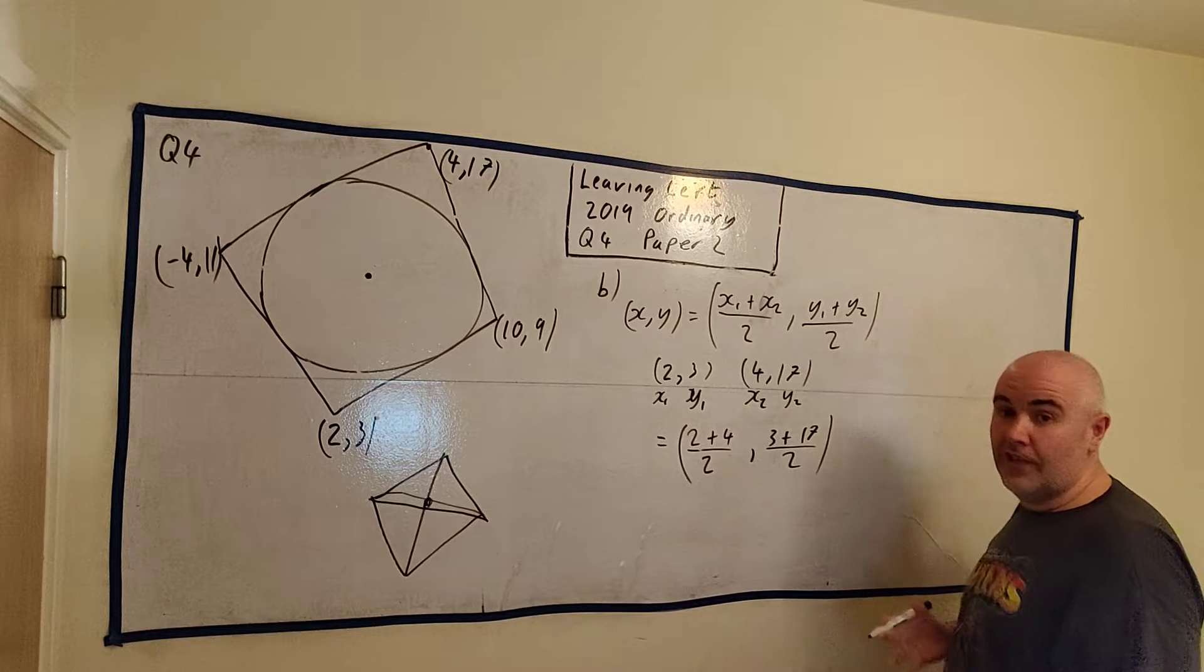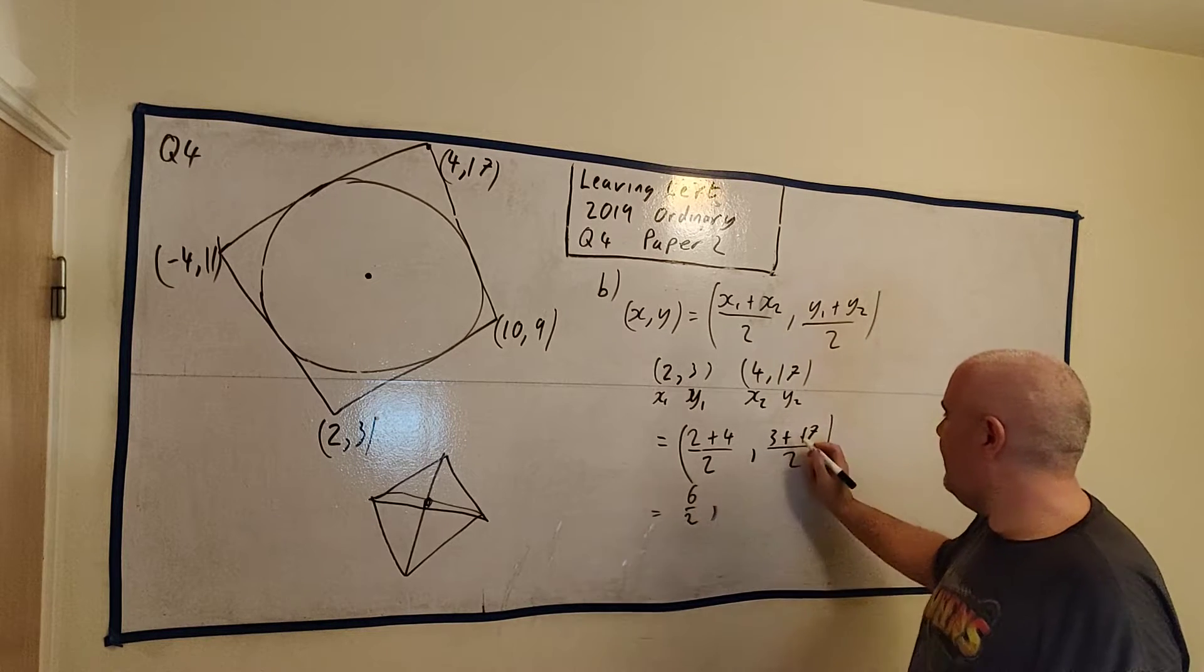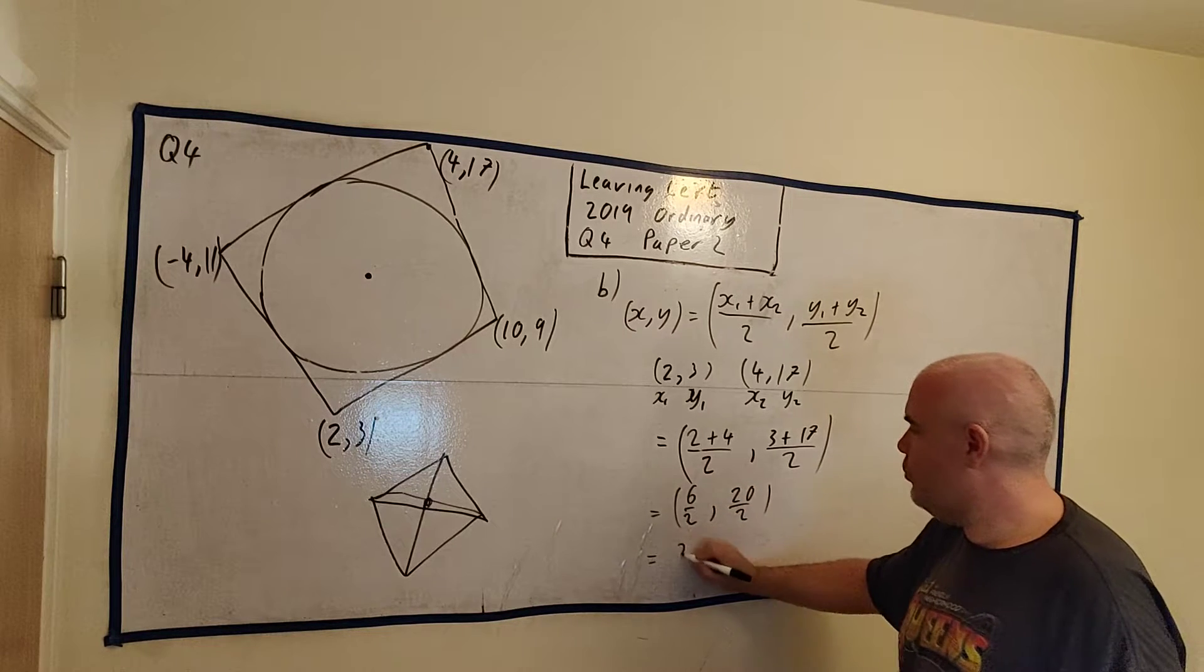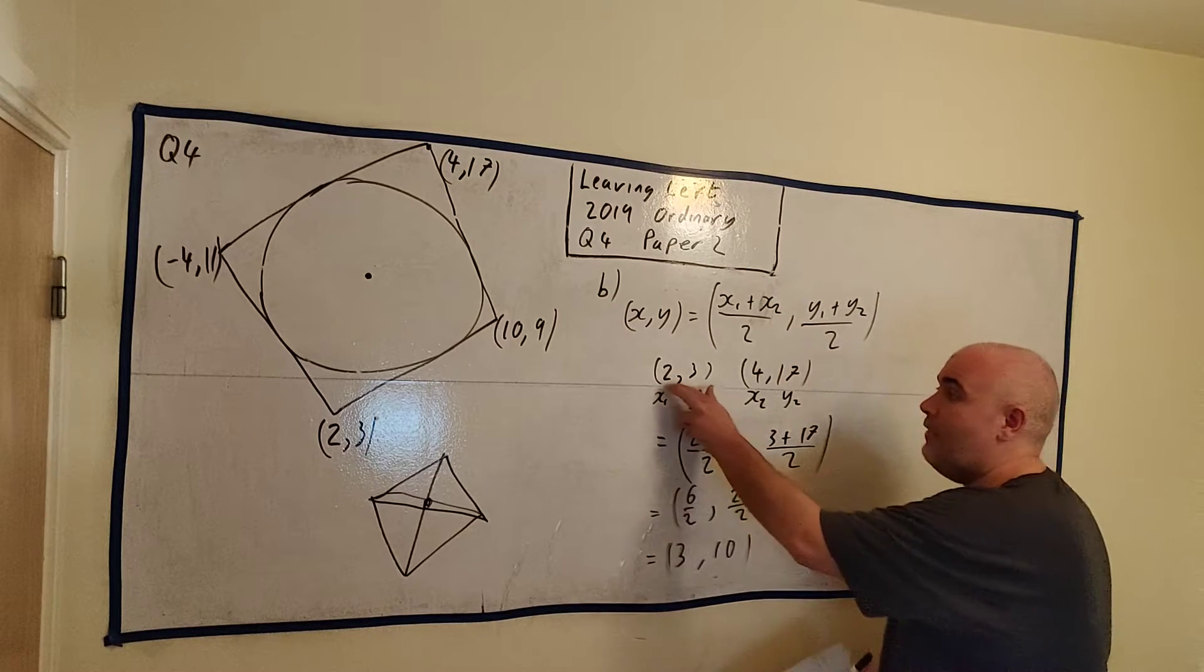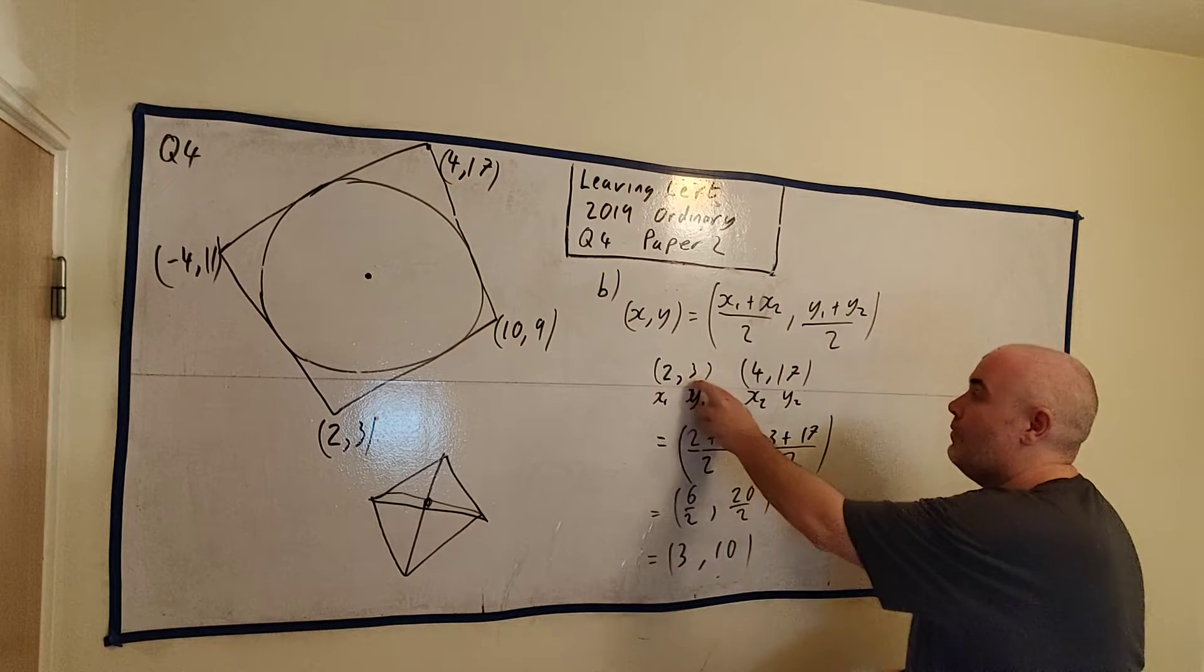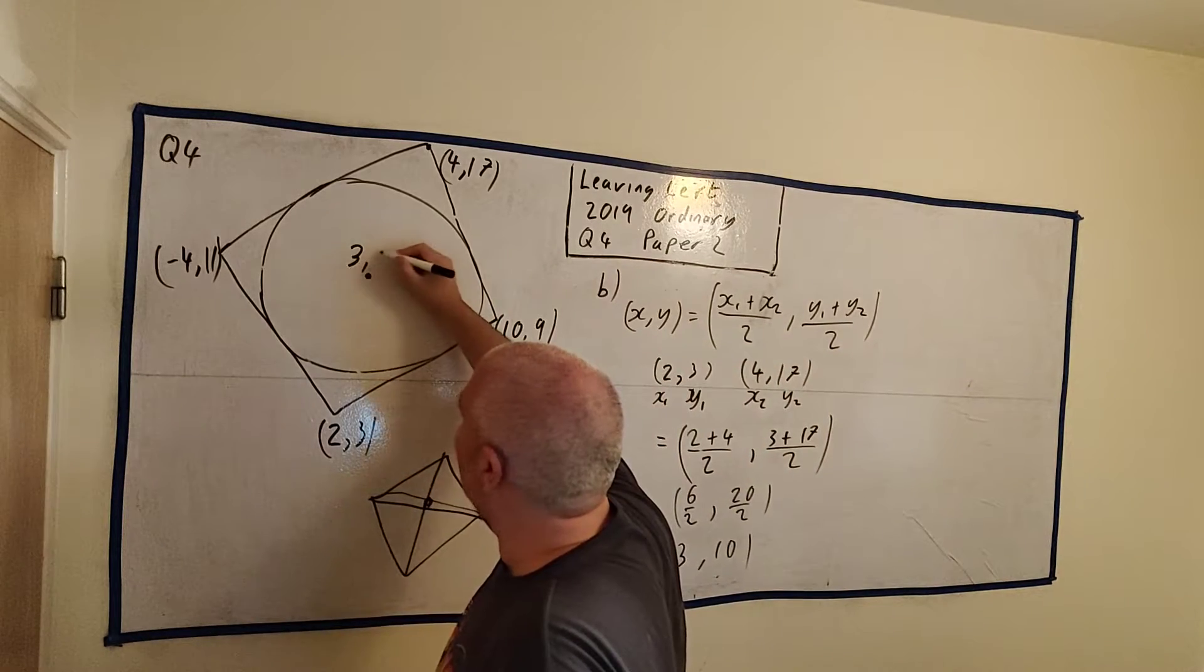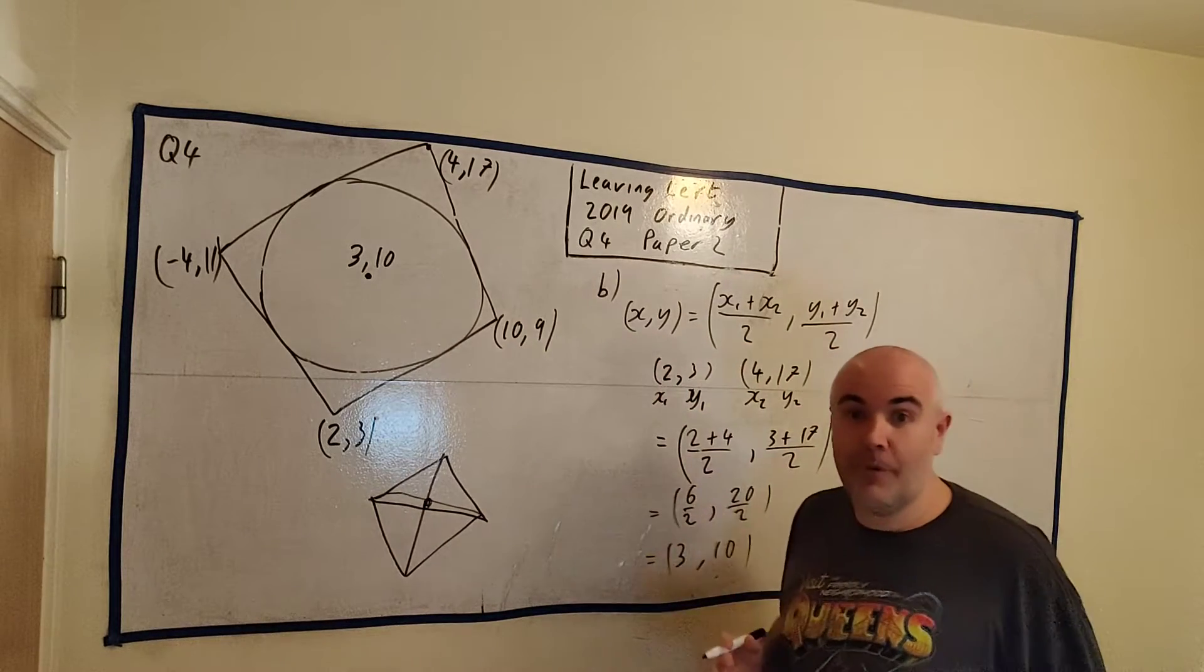It's 3 plus 17 over 2, a little harder to do in your head. But this is 20 over 2, so that becomes 3, 10. And 3 is halfway between 2 and 4, 10 is halfway between 3 and 17. Let's put this one up before I rub it off: 3 and 10 there. Okay, I'll rub this off and we'll do part C.